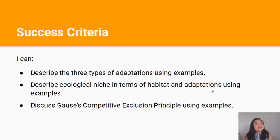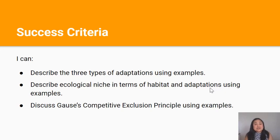By the end of this lesson you should be able to describe the three types of adaptations using examples, describe ecological niche in terms of habitat and adaptations using examples, and discuss Gause's competitive exclusion principle using examples.